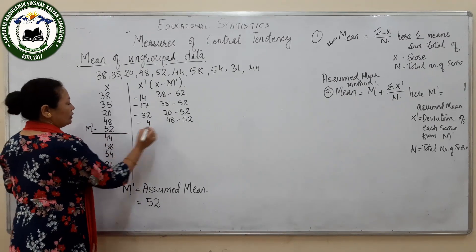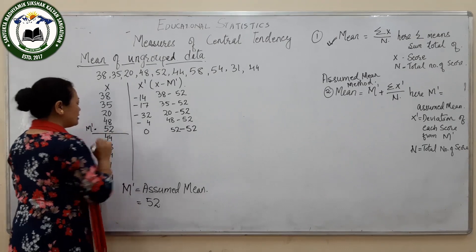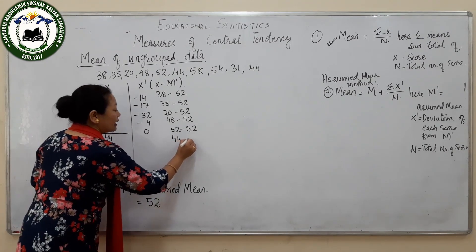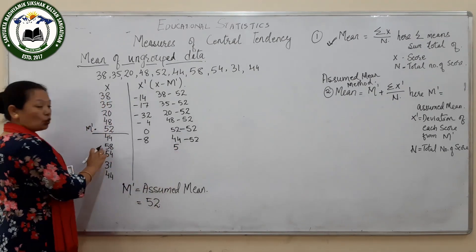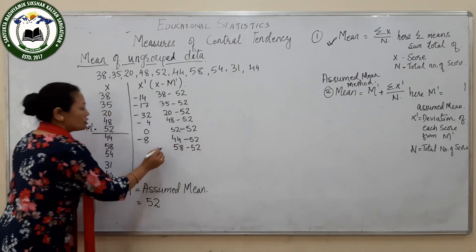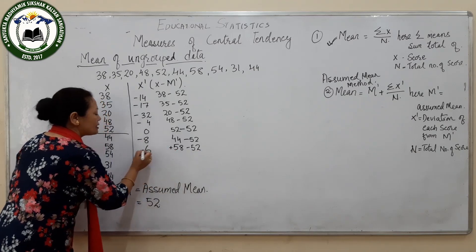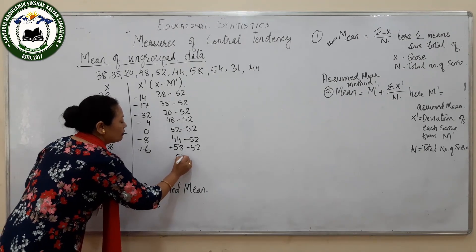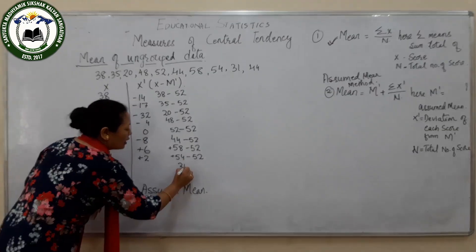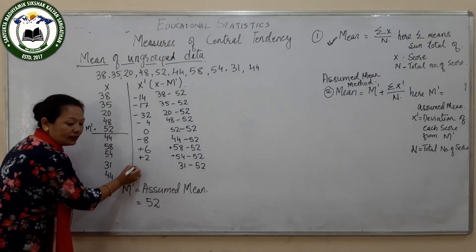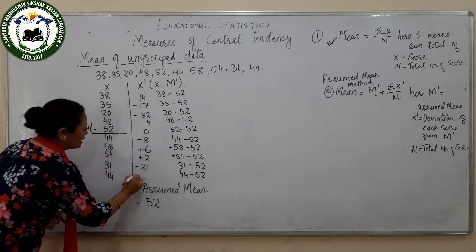For score 58: 58 minus 52 gives plus 6, since 58 is bigger than 52. For 54: 54 minus 52 gives plus 2. For 31: 31 minus 52 gives minus 21. For 44: 44 minus 52 gives minus 8. Now you have numbers with either minus or plus signs.